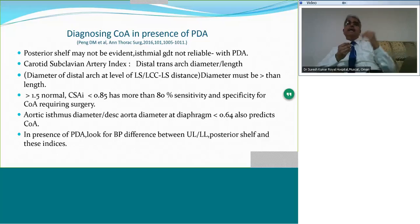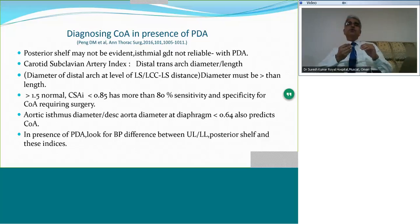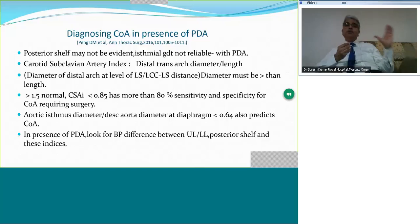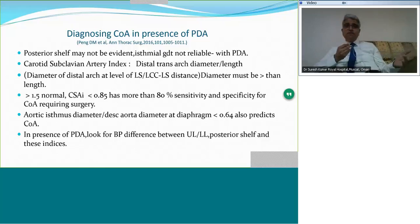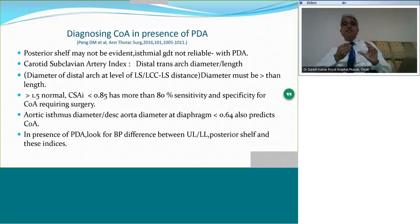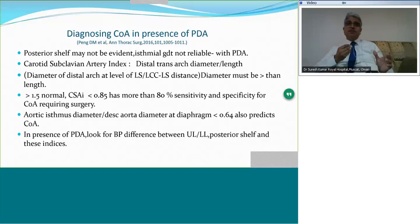Similarly, the isthmus diameter can be related to the descending aorta. The normal isthmus diameter should be about two-thirds of the descending aortic diameter; if it is less than 0.64, that predicts coarctation. When you have this problem, start your assessment clinically — look for blood pressure difference between upper and lower limbs, look for the posterior shelf. Then examine the distal transverse arch length and diameter, and the isthmus diameter. These are the things that will give you a clue about diagnosing significant coarctation in the presence of a PDA.